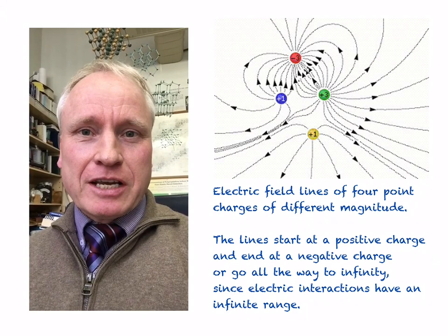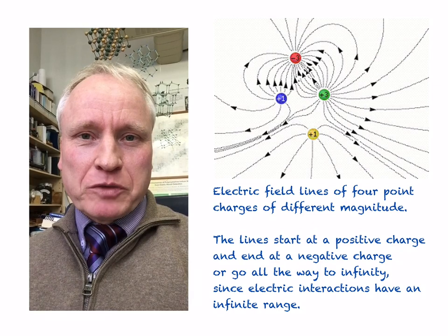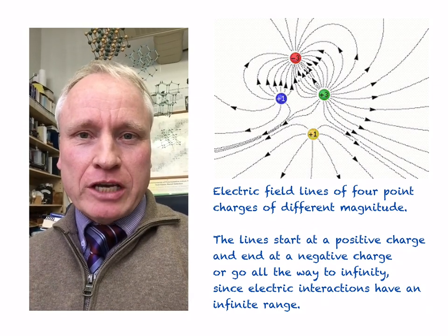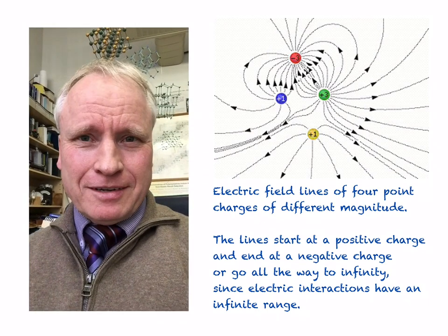Electric charges can affect other electric charges that are far away from them. In electromagnetism, this connection between cause and effect is expressed using the electric field concept. The cartoon shows the electric field lines of four point charges of different magnitude. Since the point charges are arranged in an odd fashion and carry different amounts of charge, the pattern of field lines is quite complex. The lines start and end at a charge or go all the way to infinity, since electric interactions have an infinite range.